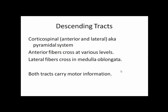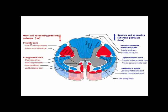For descending tracts, we'll look at a couple. One set is called the corticospinals — there are anterior and lateral corticospinal tracts, sometimes known as the pyramidal system. The anterior fibers cross at various levels and the lateral fibers cross at the medulla. Because they're descending tracts, they carry motor information. The lateral corticospinal is in the lateral funiculus and the anterior corticospinal is in the anterior funiculus. These are very important tracts.